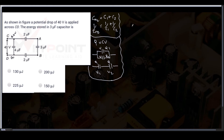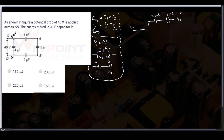Let us redraw the circuit. Starting from point C, we have 2 microfarad, then 3 microfarad, then 2 microfarad in series. In parallel with that series branch, there is a 4 microfarad capacitor. This gives us the simplified equivalent circuit.